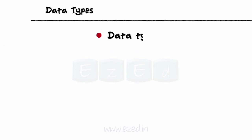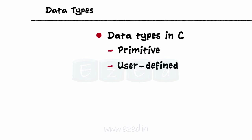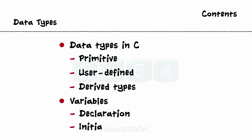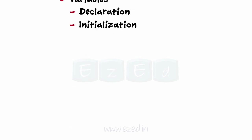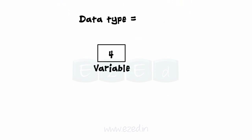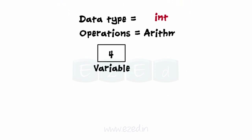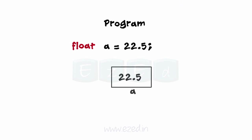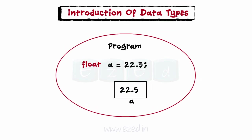In this EasyEd video lecture, we are going to learn the various data types in C, which are broadly divided into primitive, user-defined, and derived types. We will also study the variables and their declaration and initialization. A data type basically determines the type of value a variable can hold and the operations that can be performed on it. When we use a variable in a program, we have to mention the type of data which it will store, which is handled using data type in C.